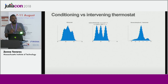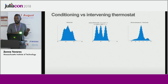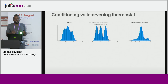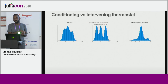Another important property of interventions: we can force conditions that are impossible within the model. Since the AC is never on when the window is open in our model, we can't condition on that event — but we can intervene on it. Forcing this intervention, we can observe the new distribution over the thermostat temperature given that impossible combination.